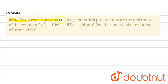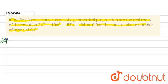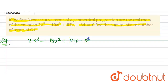If the first three consecutive terms of the geometric progression are the real roots of the given equation: 2x³ minus 19x² plus 57x minus 54 equals zero, then find the sum of the infinite number of terms of the GP. So let's solve this question. The given equation is 2x³ minus 19x² plus 57x minus 54 equals zero.